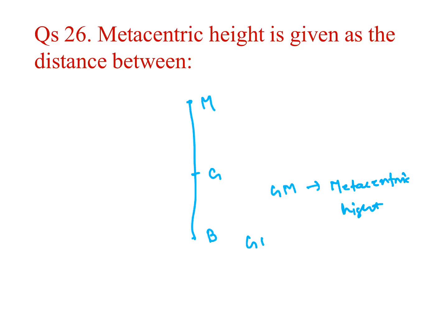GM equal to BM minus BG, I by V minus BG. Distance between center of gravity and metacenter.